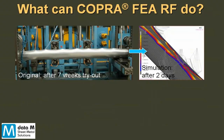What you see here is a picture of a high tensile material tube mill after a seven-week desperate tryout on the mill. You can see the wrinkles which do not allow a proper welding — in fact, they don't even allow an improper welding.